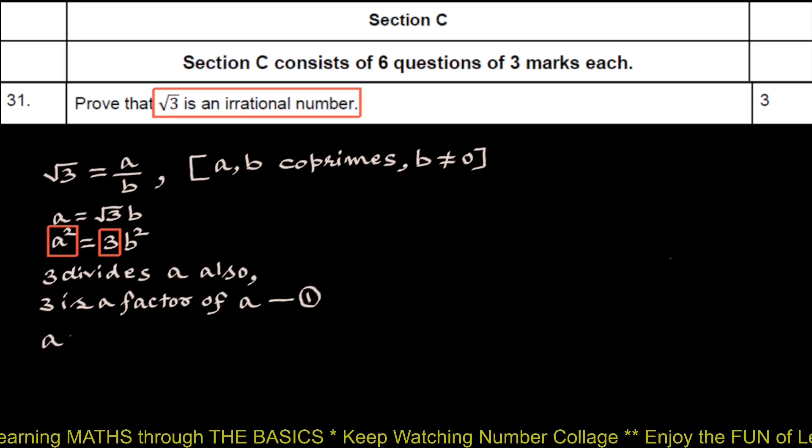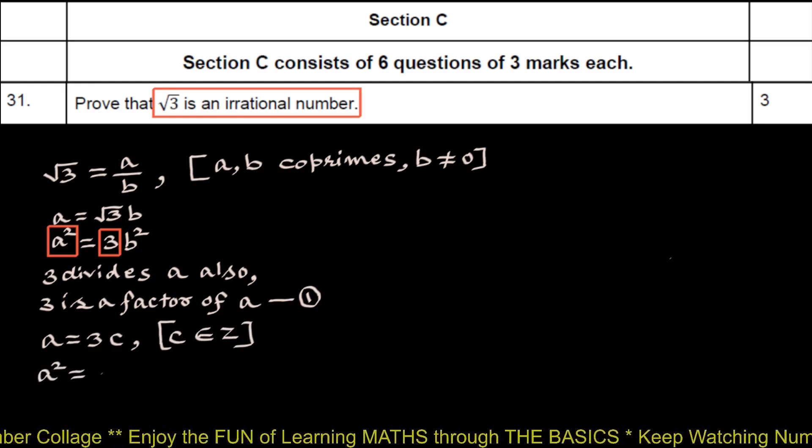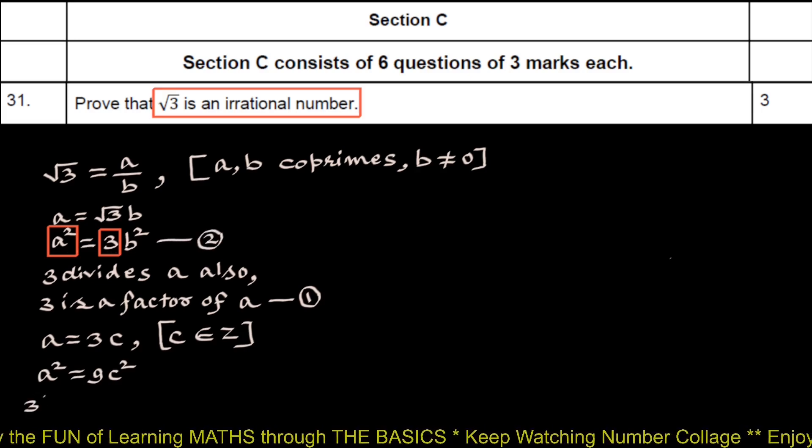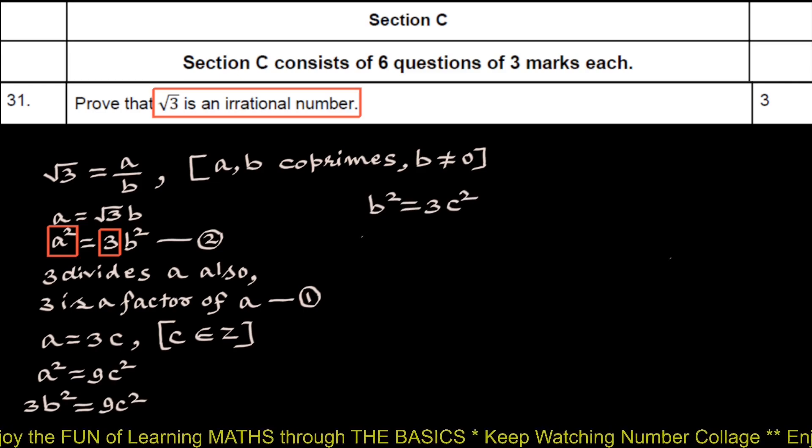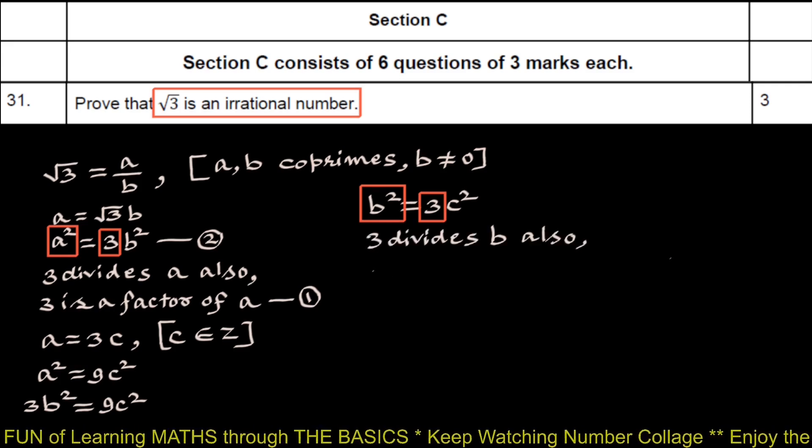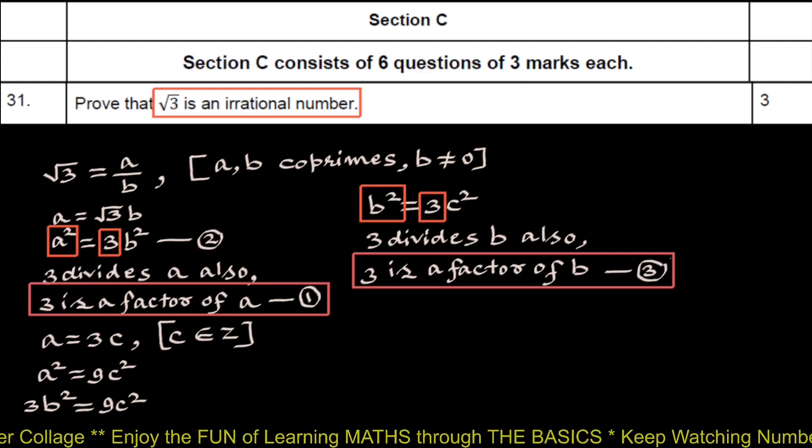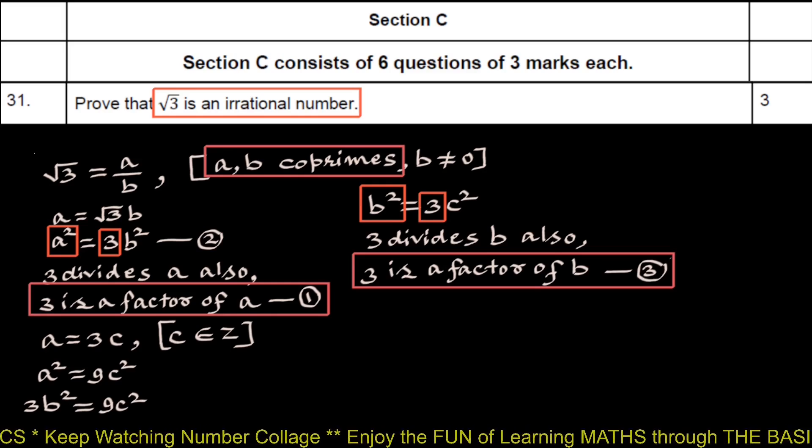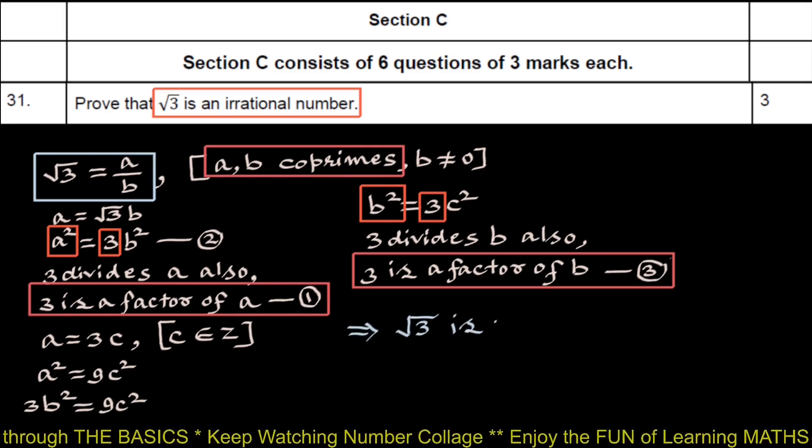From 1, we can write A equals 3C, where C is another integer. Squaring, A square equals 9C square. But from this statement 2, A square is 3B square. So 3B square equals 9C square. Dividing by 3, B square is 3C square. According to the same theorem once again, if 3 divides B square, then 3 divides B also. Which means 3 is a factor of B. We name this 3. Statements 1 and 3 contradicts the fact that A and B are co-primes. So our assumption that root 3 is rational number is wrong. And by contradiction method, this proves root 3 is an irrational number. Hence proved.